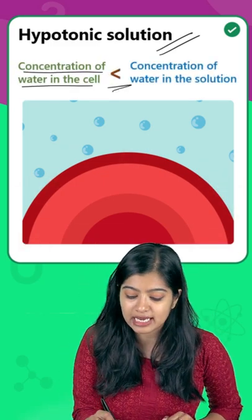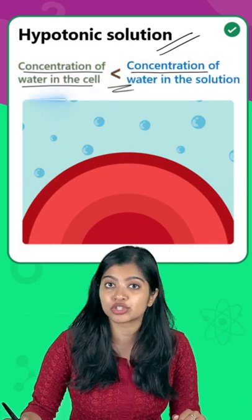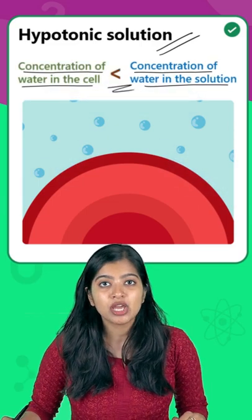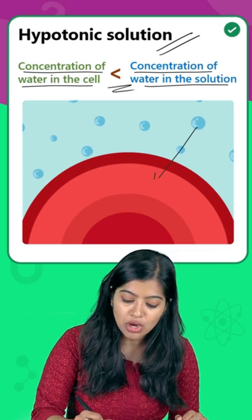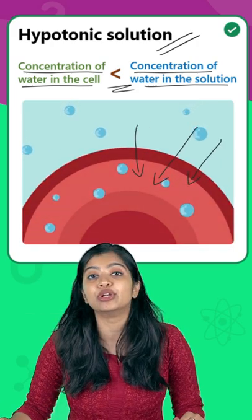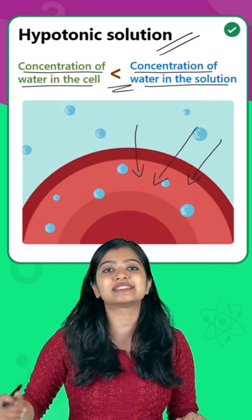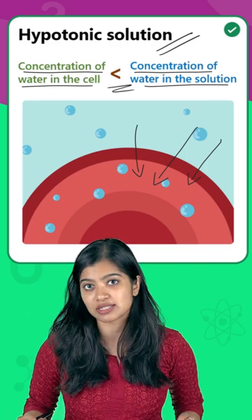Because the concentration of water inside the cell is lesser when compared to the concentration of water in the solution, water from the outside, or from a region of higher concentration, would enter into a region of lower concentration across the semi-permeable membrane by the process of osmosis.